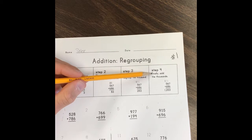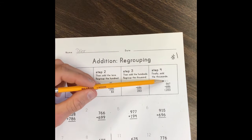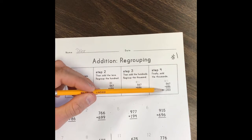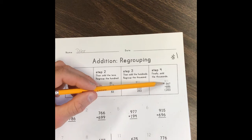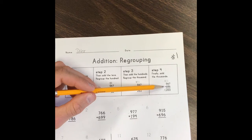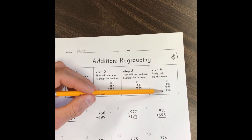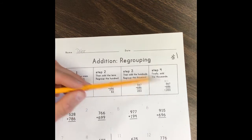Step four: finally, add the thousands. One plus zero is one. Five hundred sixty-seven plus six hundred eighty-six equals one thousand two hundred fifty-three.